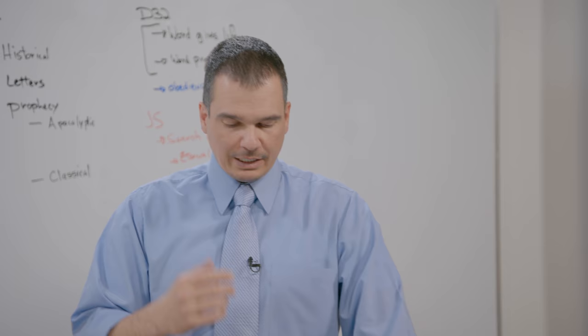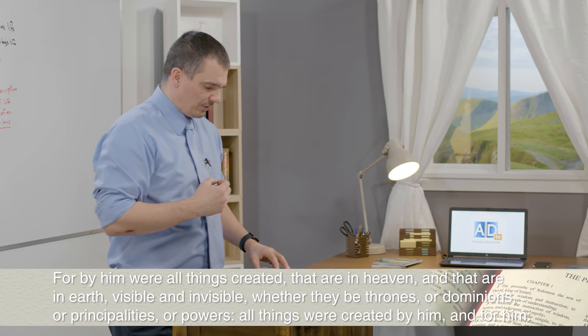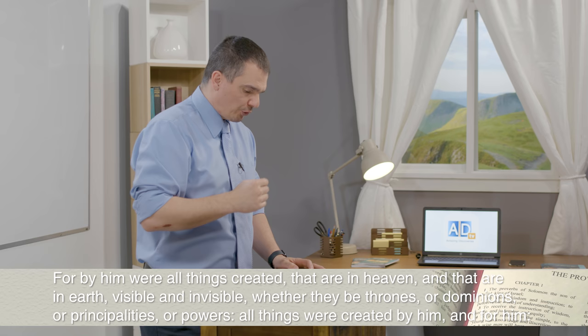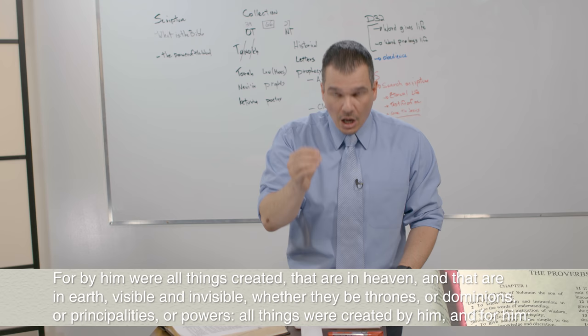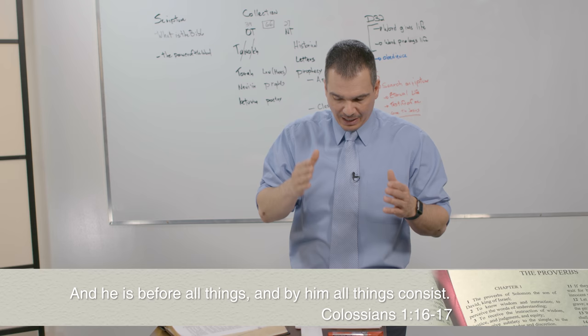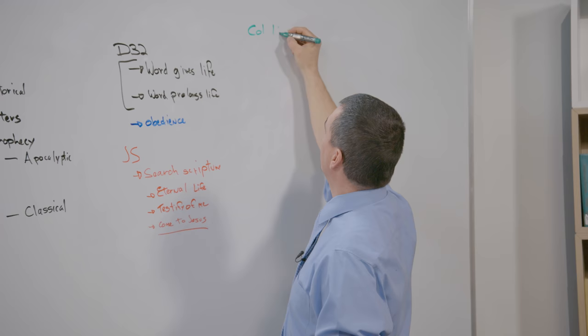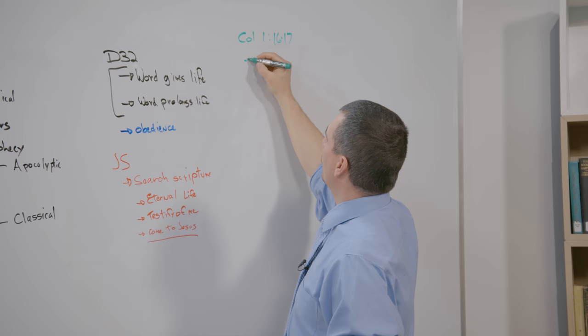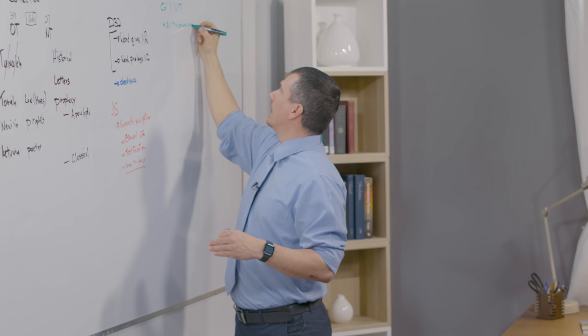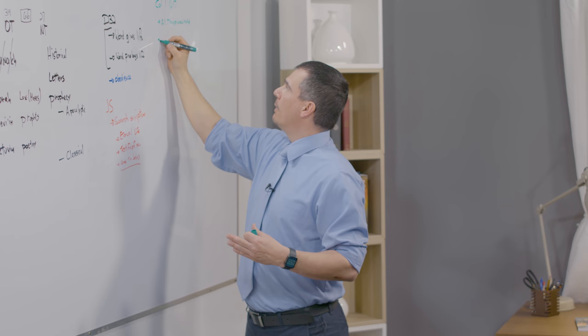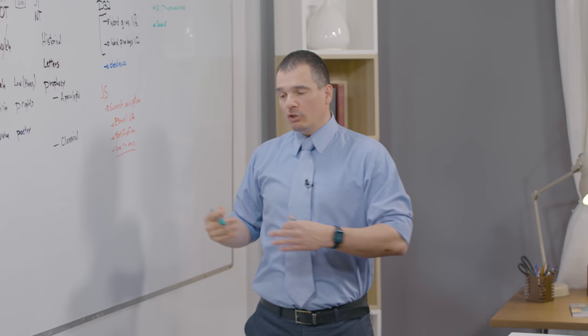I'd like to invite you to turn to Colossians chapter 1. We'll read verse 16 and 17. Speaking of Jesus, it says, for by him all things were created that are in heaven and that are in the earth, visible and invisible, whether they be thrones or dominions or principalities or powers. All things were created by him and for him. And he is before all things and by him all things consist. Keep that in mind. Very important. Colossians 1:16-17 says through Jesus all things were created.